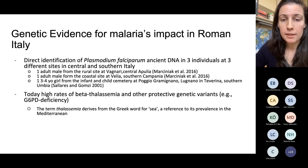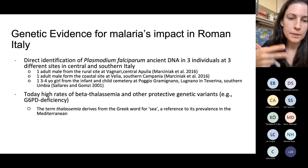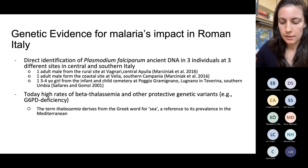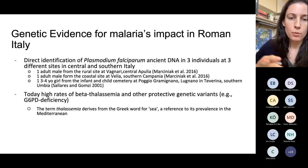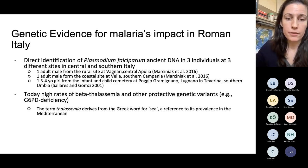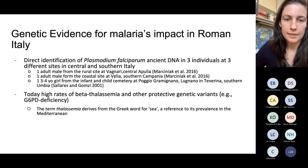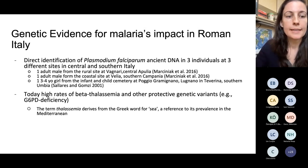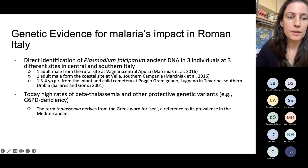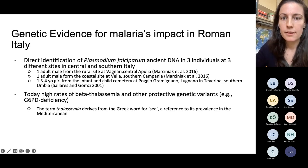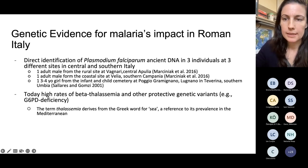You've probably heard of sickle cell anemia — that's one of the most common protective variants. If you have two copies, it can lead to anemia, but if you have one copy, you don't get the anemia manifestation but do have some protection against malaria. There are other protective variants prevalent in the Mediterranean, including G6PD deficiency, which is especially frequent in Sardinia.